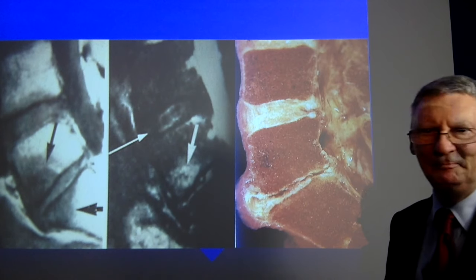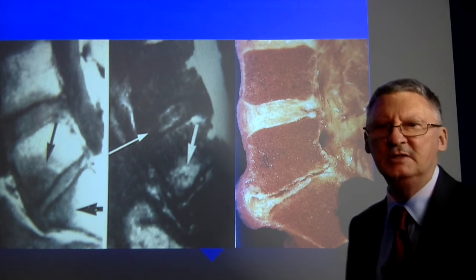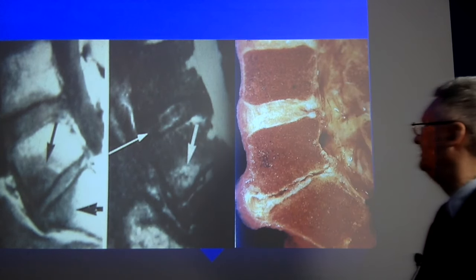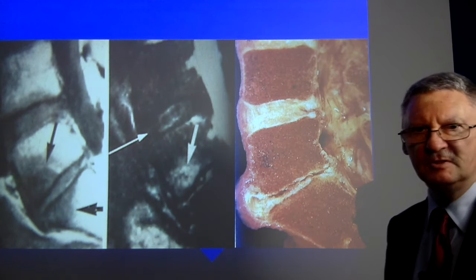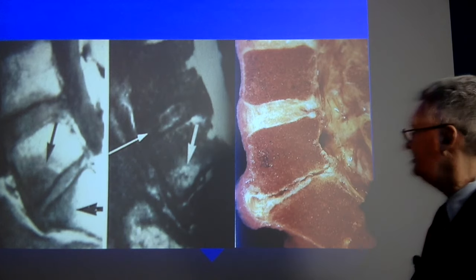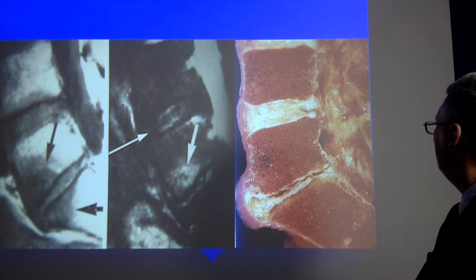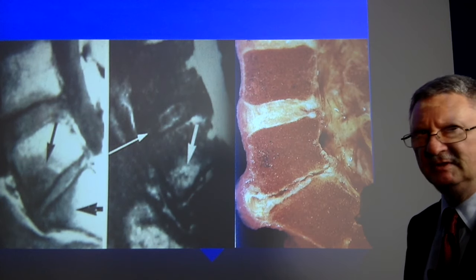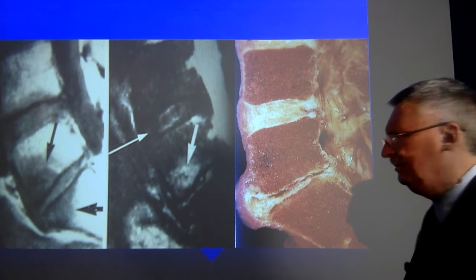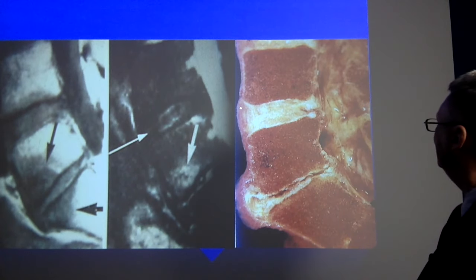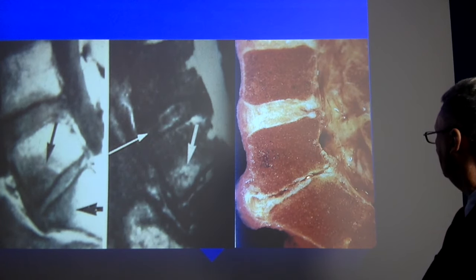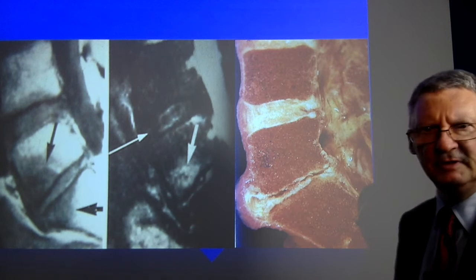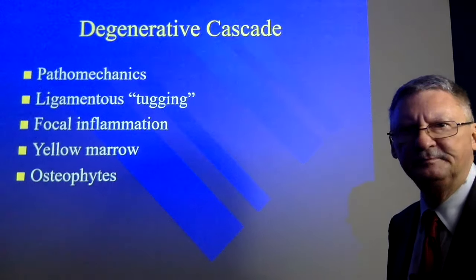I remember a medico-legal case where an adverse witness stated that spinal degenerative disease is normal aging. My response was simply: if it's normal aging, why is it different in different people? And in an individual, how much older is the degenerated disc than the relatively healthy disc?